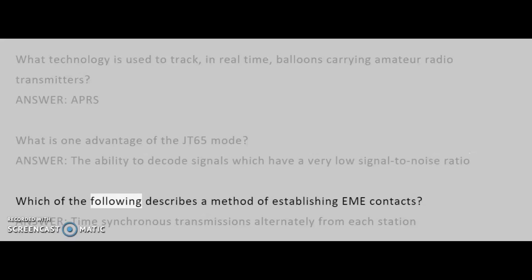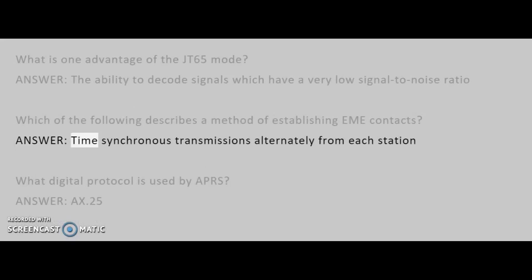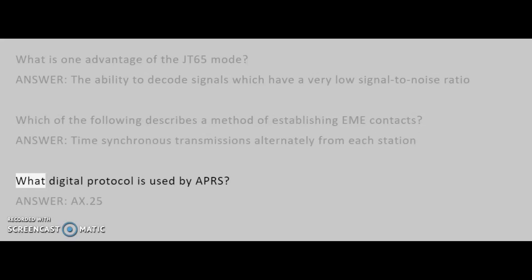Which of the following describes a method of establishing EME contacts? Answer: Time-synchronous transmissions alternately from each station.